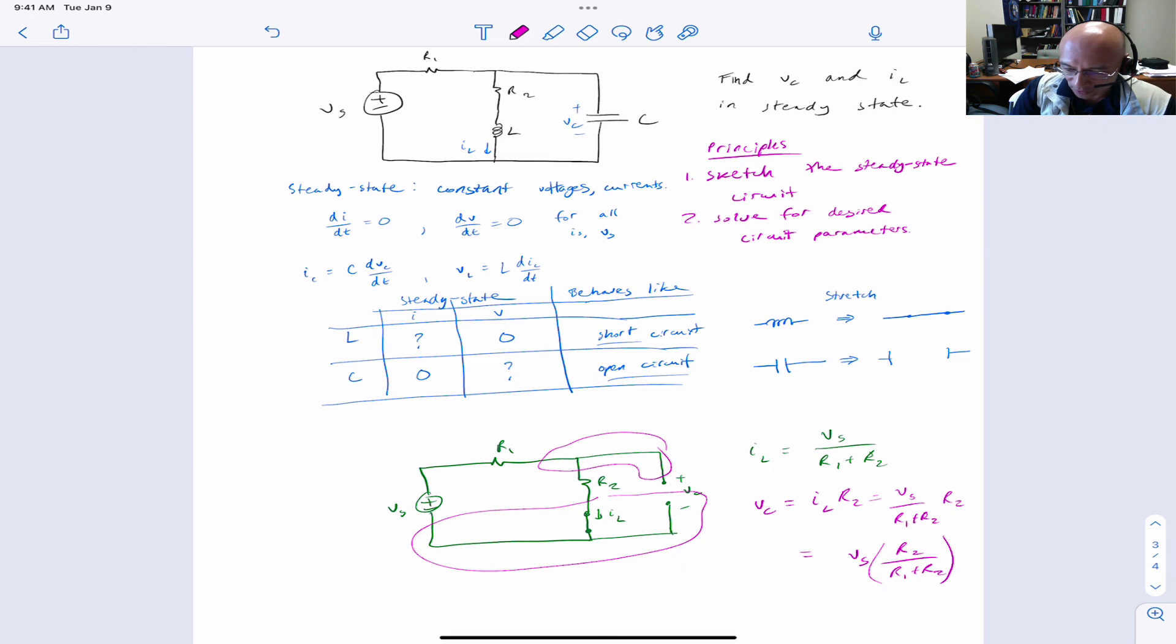Just draw the circuit, sketch it in the right steady state. If you have a switch, you may have to think about what steady state is at different times. But in this simple example, substitute the elements, remind yourself by the stretch rule, and then just do the circuit analysis. That easy. I hope you find that helpful.